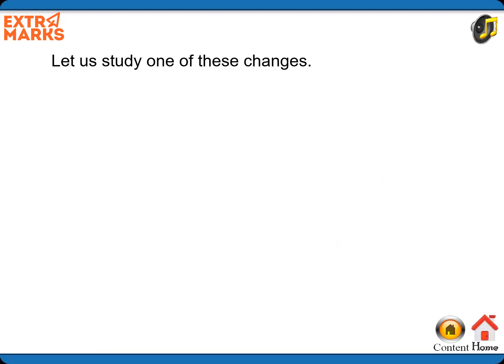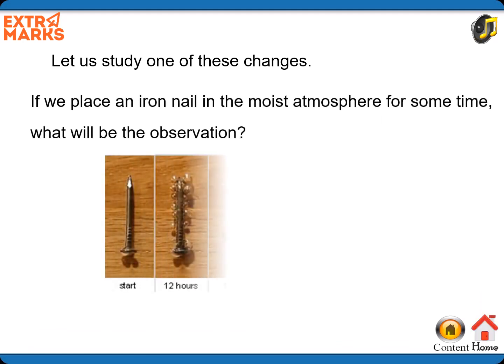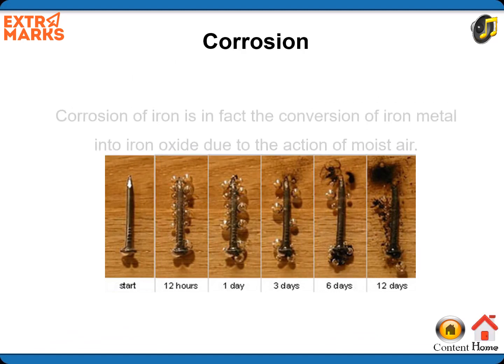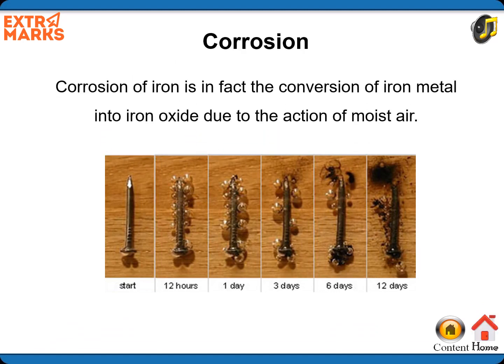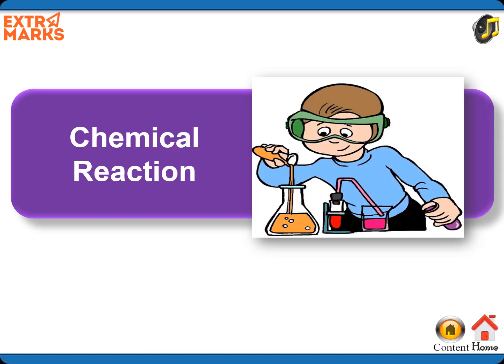Let us study one of these changes. If we place an iron nail in the moist atmosphere for some time, what will be the observation? Corrosion of iron is the conversion of iron metal into iron oxide due to the action of moist air. Corrosion of iron is an example of chemical reaction.